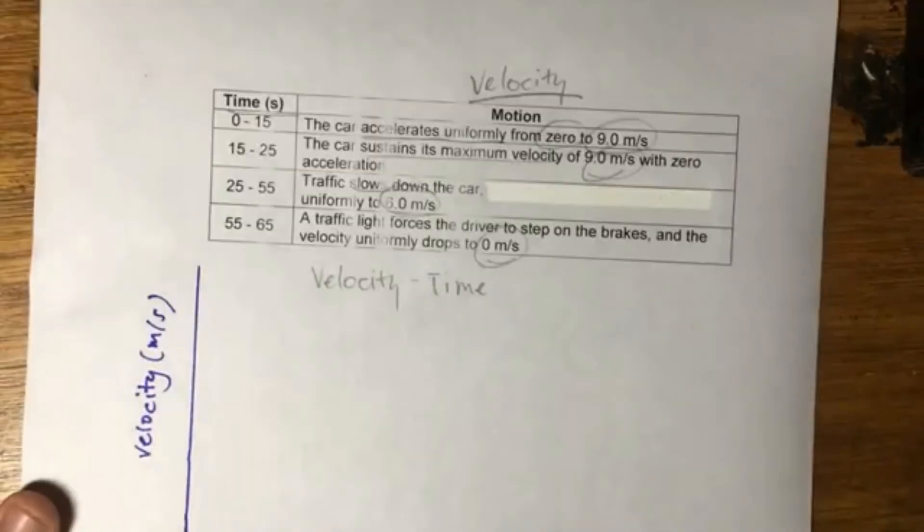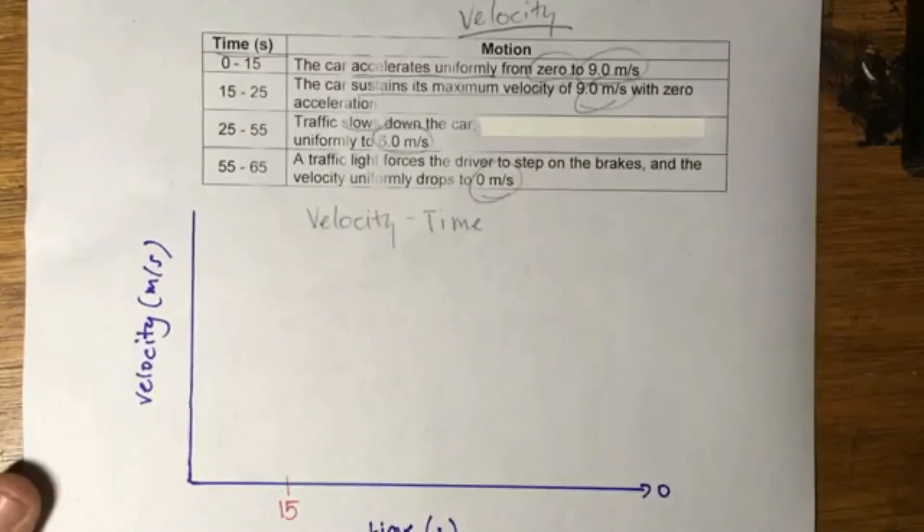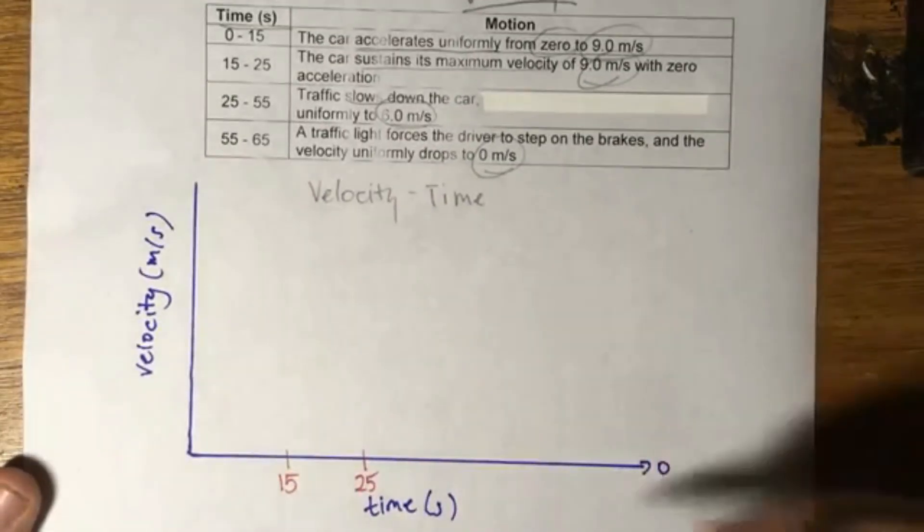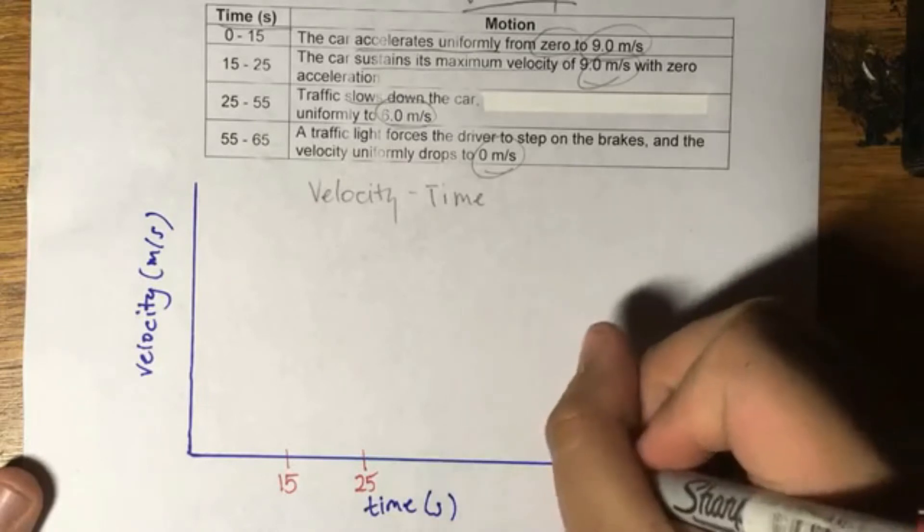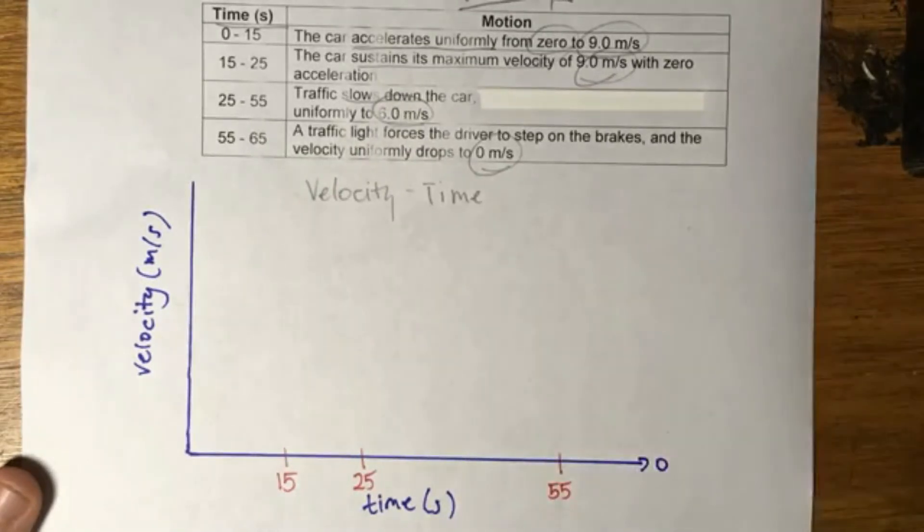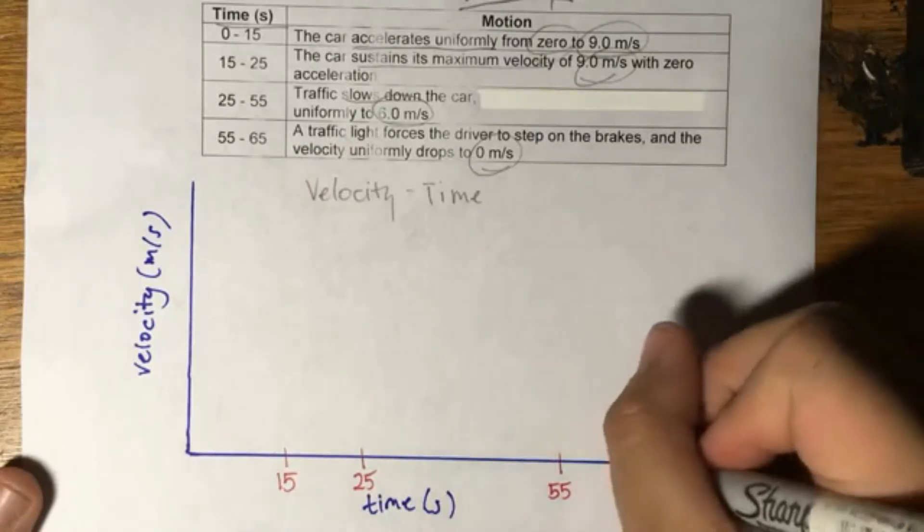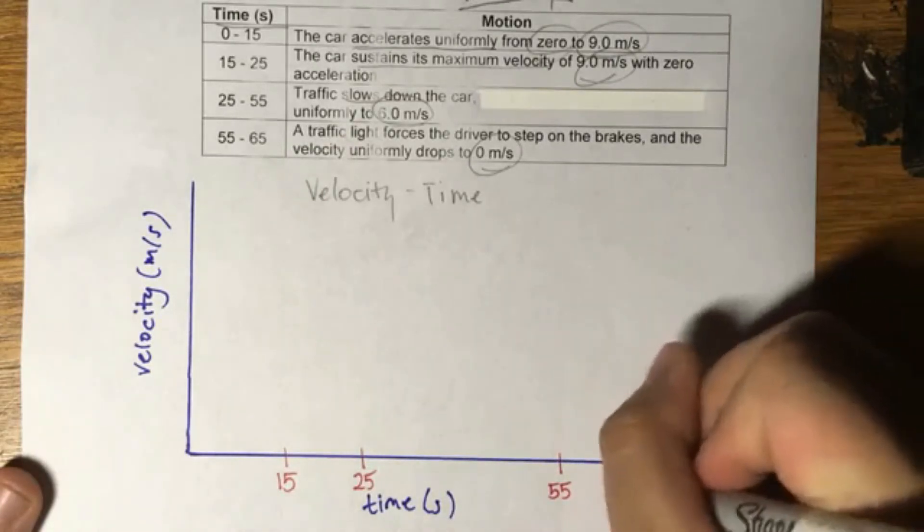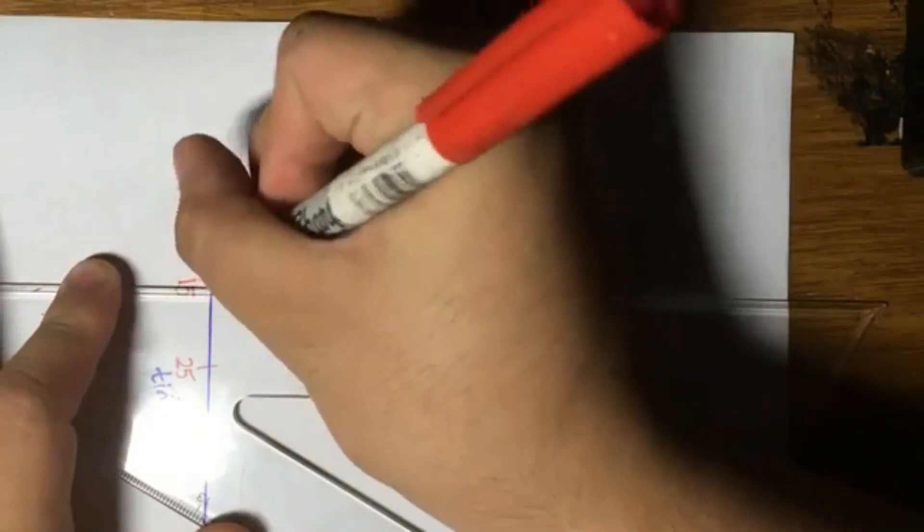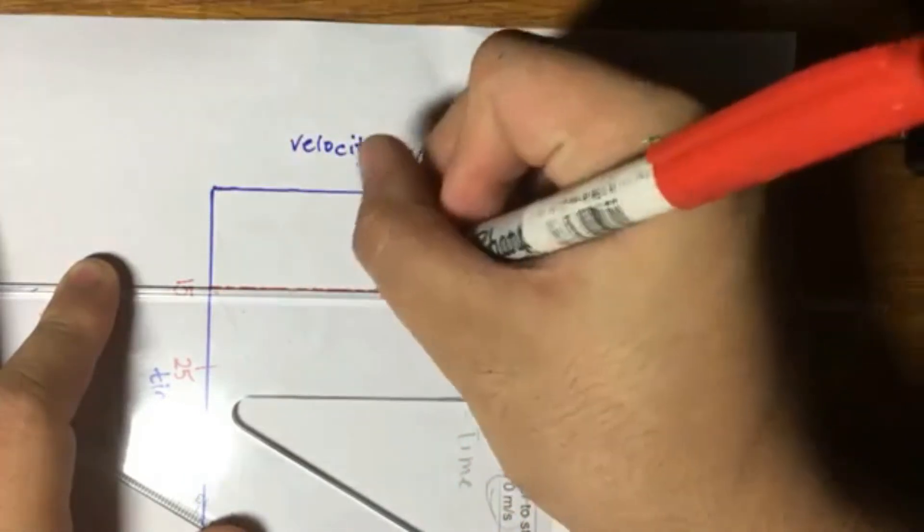And it says here 15 to 25, so 10 seconds later, this is my second one. 25 to 55, so that's a really long time frame. So I'll just reflect that in the graph. And finally, 55 to 65. So something around like that. So those are my 4 segments. Let me just draw the lines just to further divide these segments.